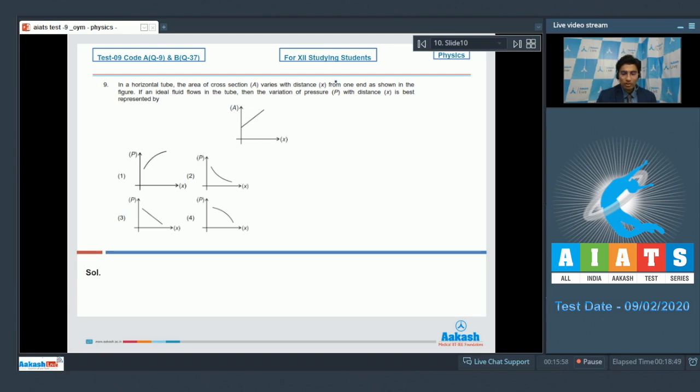Bernoulli's theorem states that pressure plus half rho v square is equal to constant. This is specifically for a horizontal tube where there is no height variations.